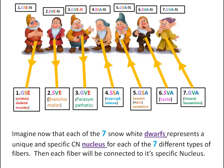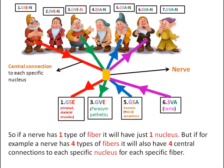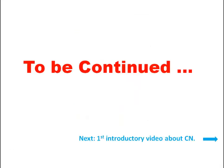Imagine now that each of the seven Snow White dwarfs represents a unique and specific cranial nerve nucleus for each of the seven different types of fibers. Then each fiber will be connected to its specific nucleus — so if a nerve has one type of fiber, it will have just one nucleus. But if a nerve has four types of fibers, it will also have four central connections to each specific nucleus for each specific fiber. This was all about the seven types of possible fibers a nerve can have.